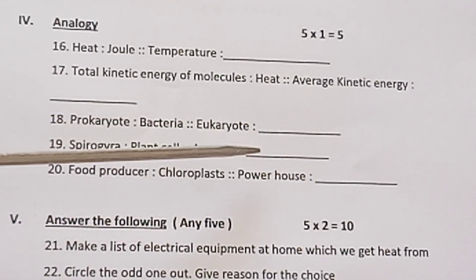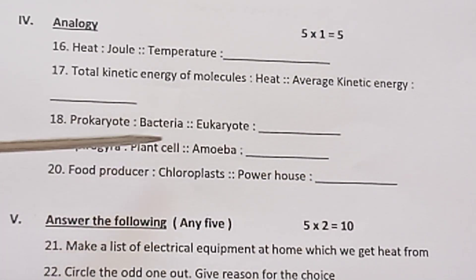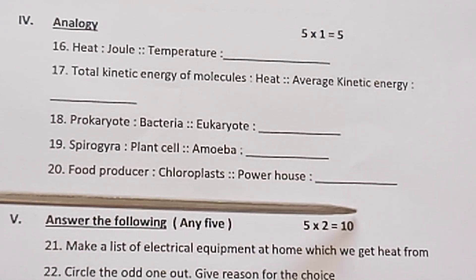Question 18: Prokaryotes : Bacteria :: Eukaryotes : ___. Question 19: Spirogyra : Plants :: Amoeba : ___. Question 20: Food producer : Chloroplast :: Powerhouse : ___.